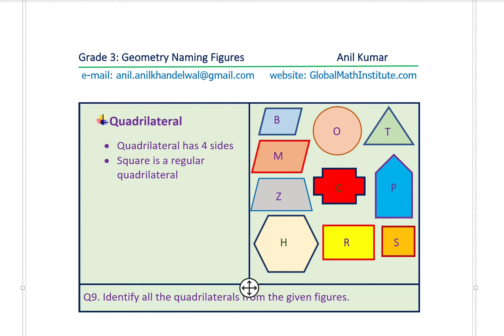Now, many shapes have four sides and we give them a group name: quadrilateral. 'Quad' means four, so four-sided figures are called quadrilaterals. A square is a regular quadrilateral since it has four equal sides. Question: identify all the quadrilaterals from the given figures — there are many four-sided figures you need to identify.